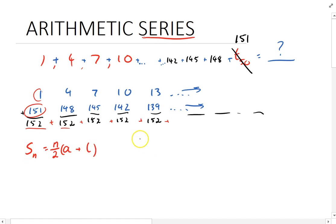So in this particular example, sum of 50 is equal to 1 plus 151 times 50 over 2. And my answer is 3,800.